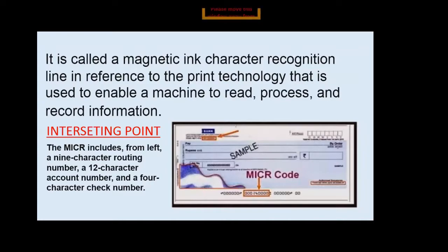It is called a magnetic ink character recognition line in reference to the print technology that is used to enable a machine to read, process, and record information. If you observe a check, this type of code — like double zero two four, triple zero — these codes are written and are read by the help of MICR, magnetic ink character recognition.